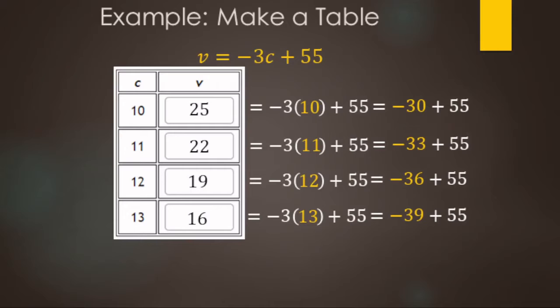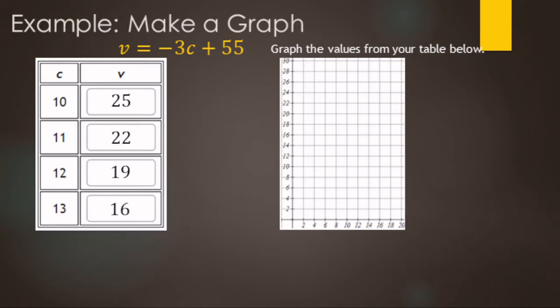This is just another way of representing the number of cakes versus vegetable oil remaining — we have it in a table with actual number examples. We can also make a graph of these.